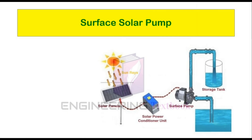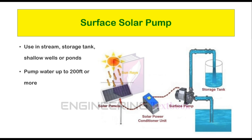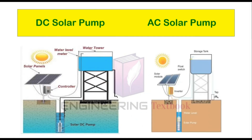The second pump is the surface solar pump. This type of pump is used in streams, storage tanks, shallow wells, or ponds. When the well water supply depth is 20 feet or less from the ground, we use this type of pump. In general, this pump cannot pump very high water from a deep well, but can pump water up to 200 feet or more. This pump can easily lift water from a depth of 20 meters.